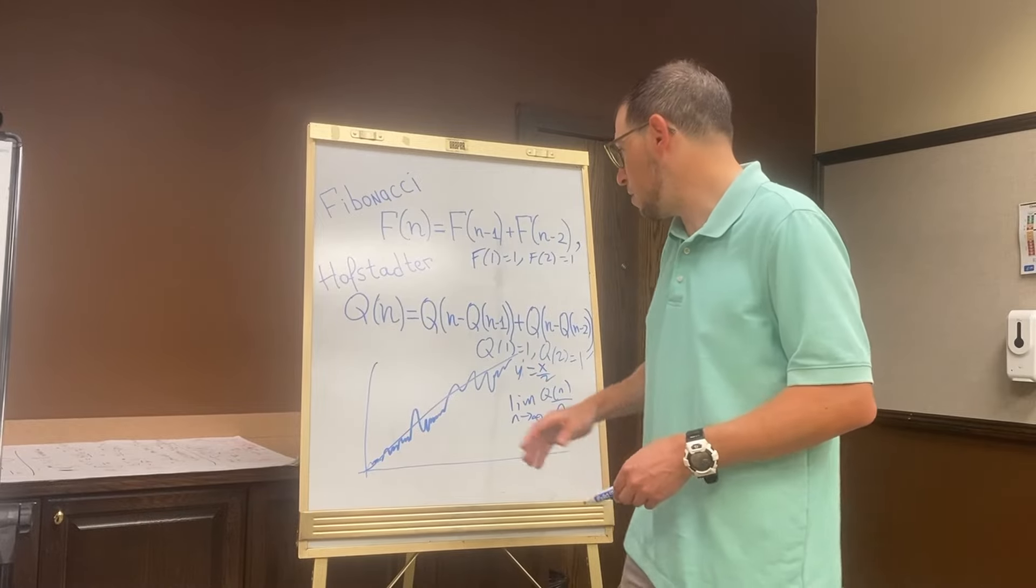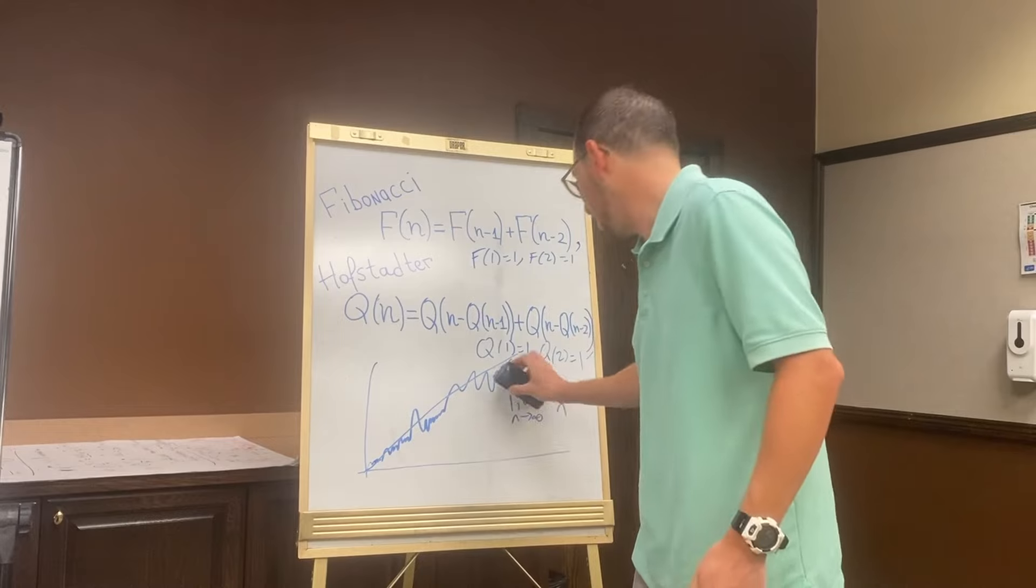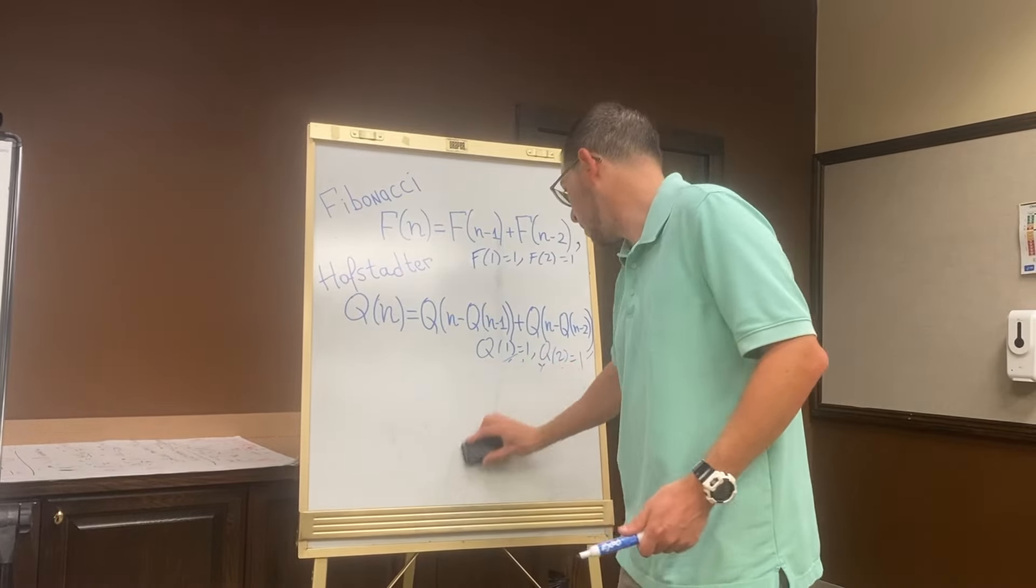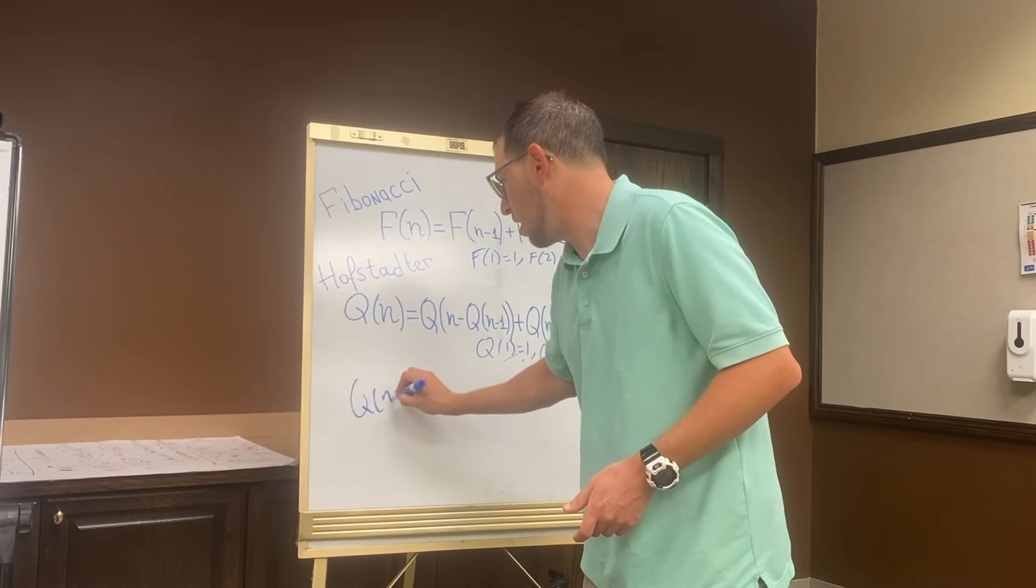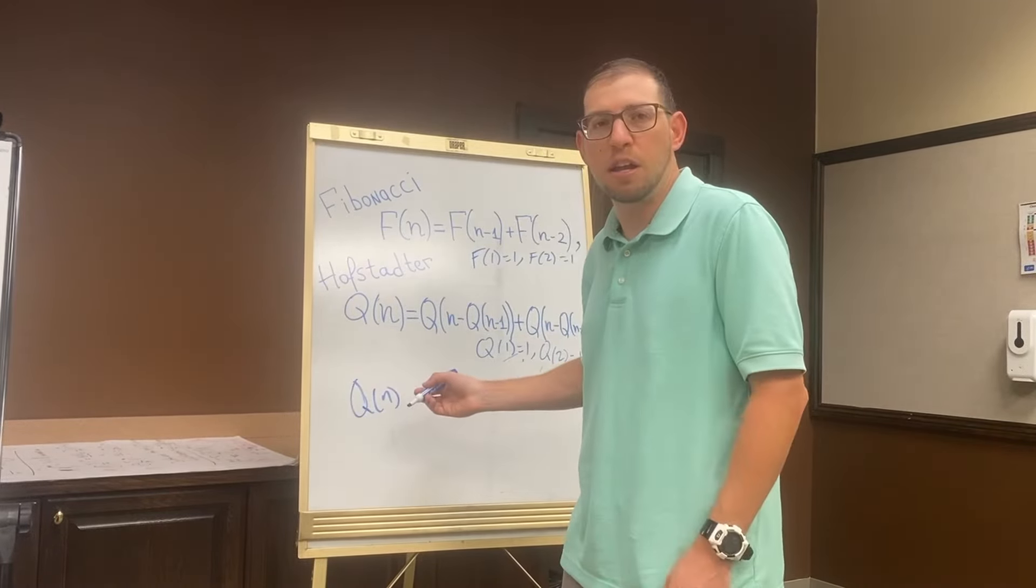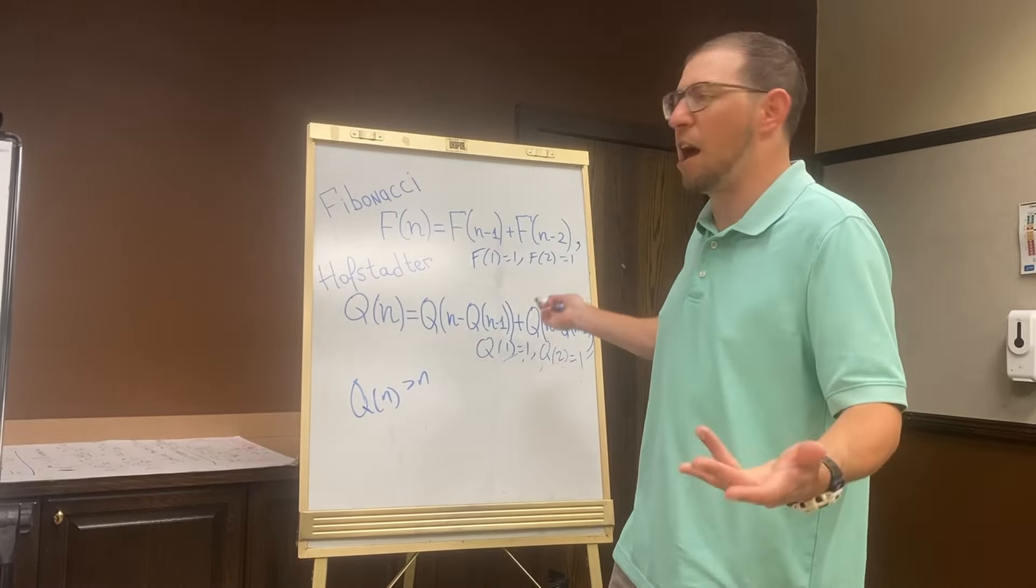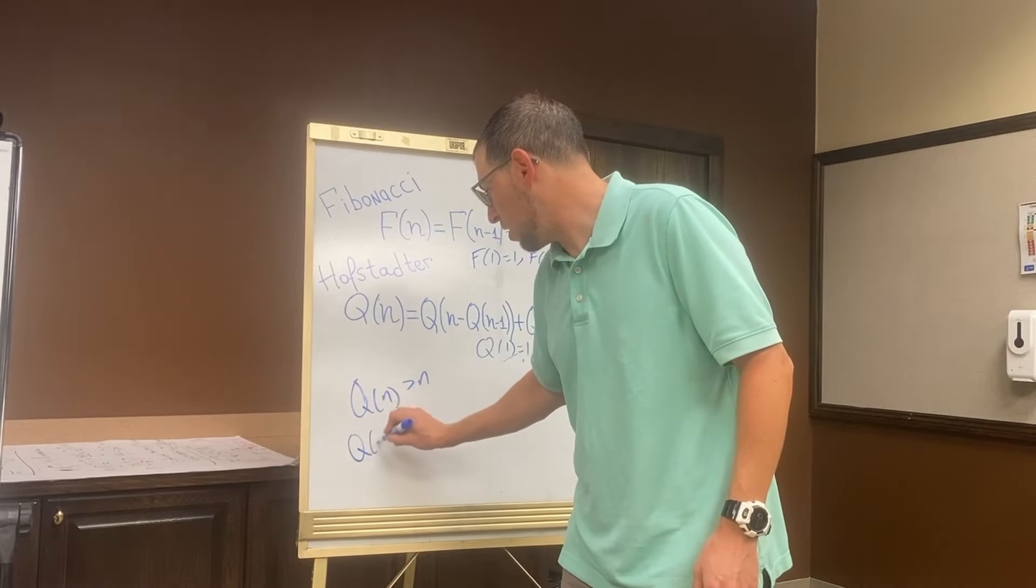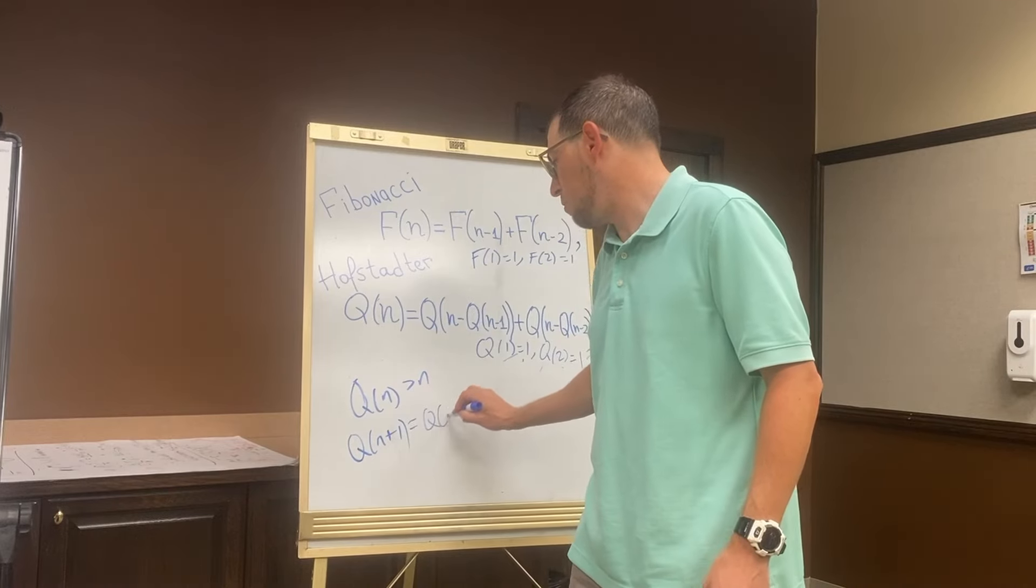How could that be? Well, suppose we're going along and we're computing terms, and let's say we get to some Q(n), and let's say that Q(n) is greater than n. There's no inherent reason why that shouldn't be able to happen here. Then you go and compute Q(n+1), and this would be Q(n+1 - Q(n)) + another term.